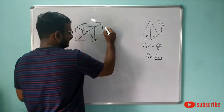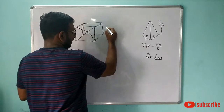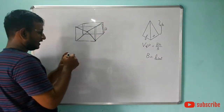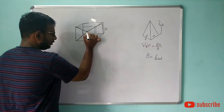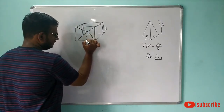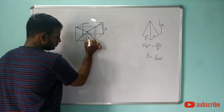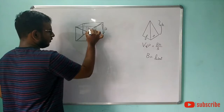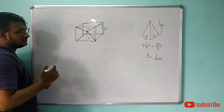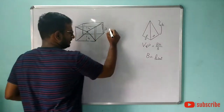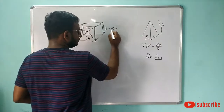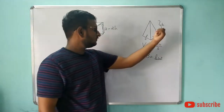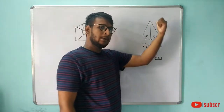The height of the cuboid is capital H, and the height of each pyramid is small h. Two pyramids stacked give us 2h, so capital H is equal to 2h, which is nothing but the full height of the cuboid formed.